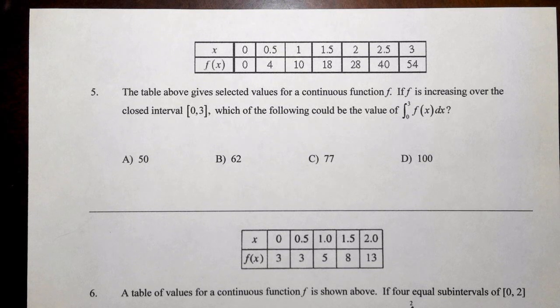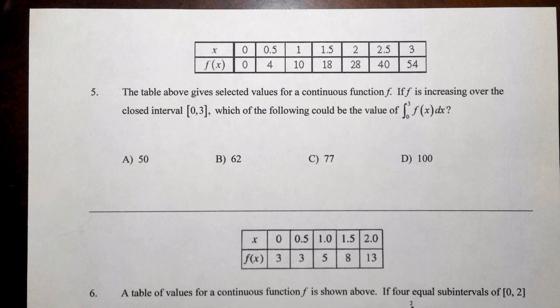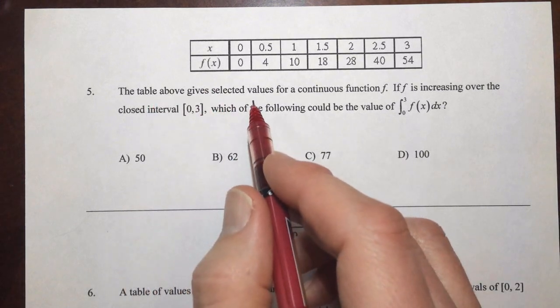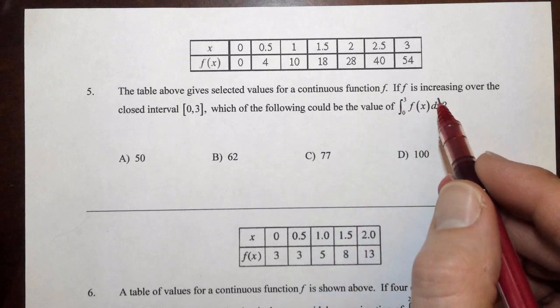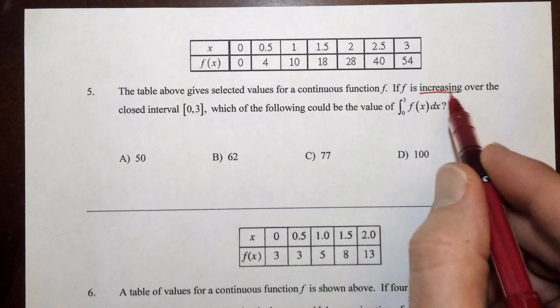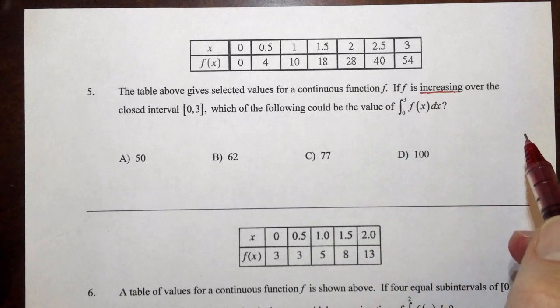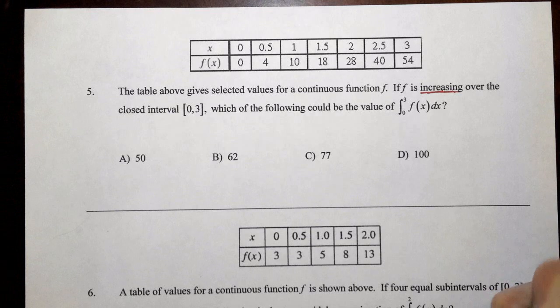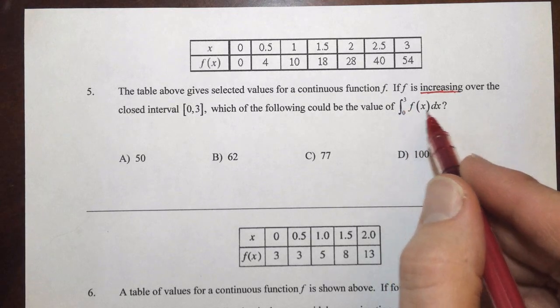For page 3, we're now getting into the heart of our sums with problem number 5. The table above gives selected values for a continuous function f. We're told that f is increasing. They're probably telling us that for a reason, so let me just underline that. f is increasing over the closed interval. Which of the following could be a value for the integral from 0 to 3 of f(x) dx?